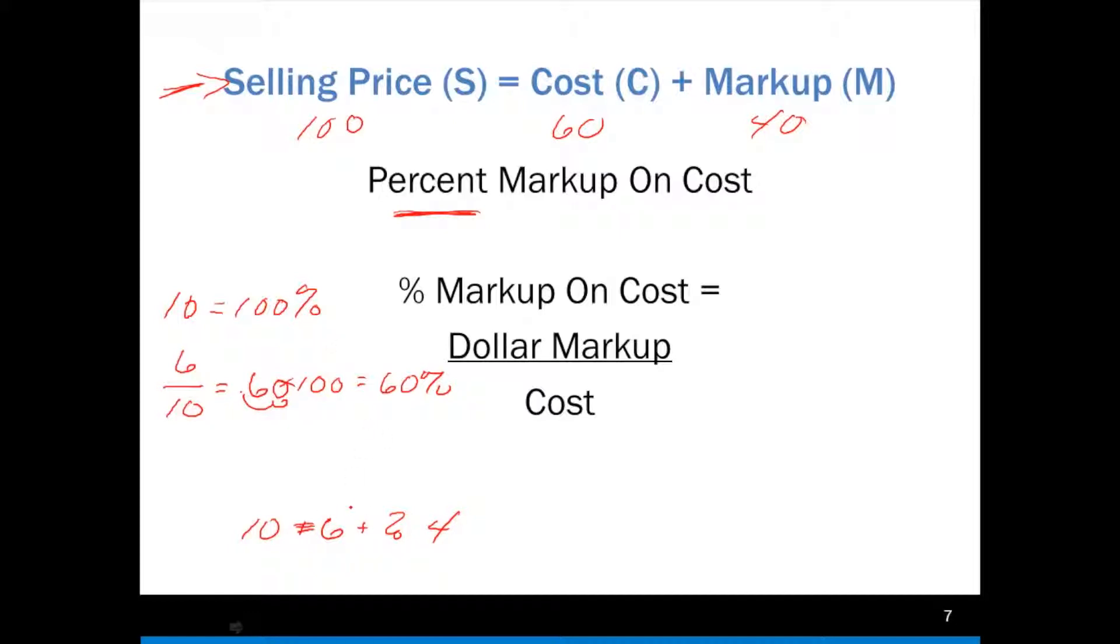But we have the same relationship with percentages. If I have 100%, and I know that 60% were not eaten, that means 40% were eaten. Whenever I know 2 out of 3, I can figure out the other one.